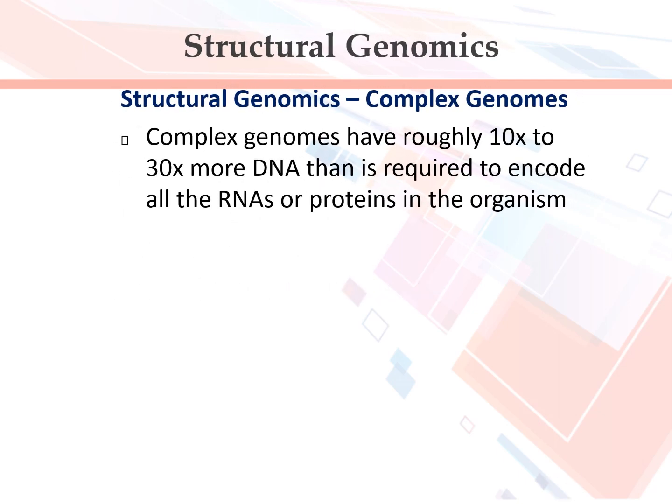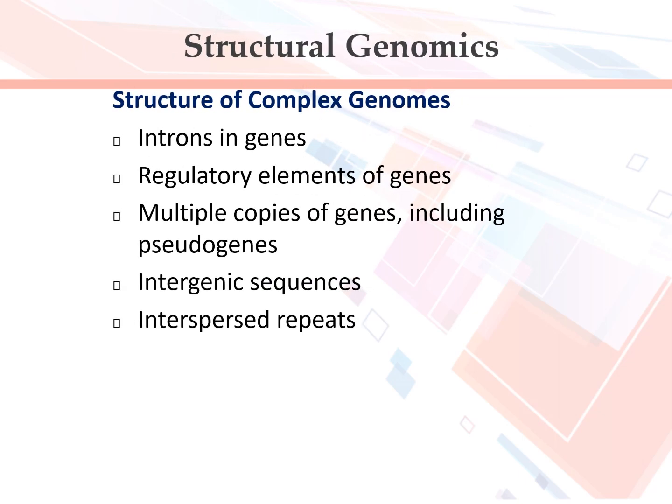Complex genomes have roughly 10x to 30x more DNA than is required to encode all the RNAs or proteins in the organism. The structure of complex genomes includes introns in genes, regulatory elements of genes, multiple copies of genes including pseudogenes, intergenic sequences, and interspersed repeats.